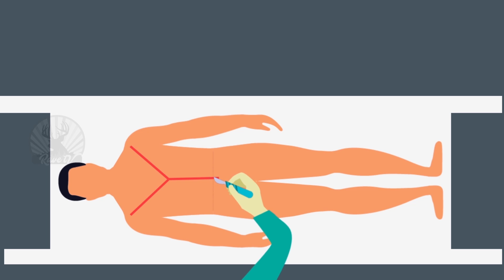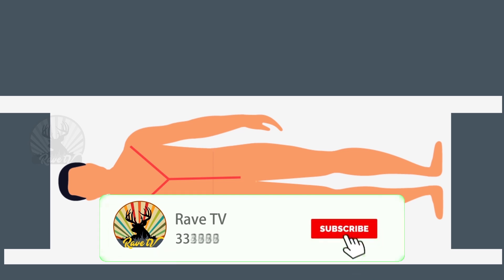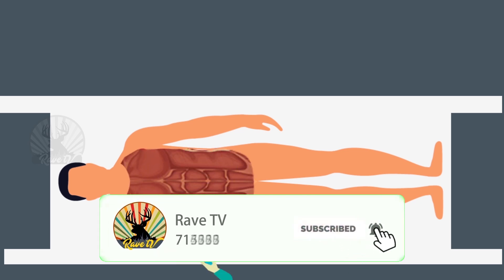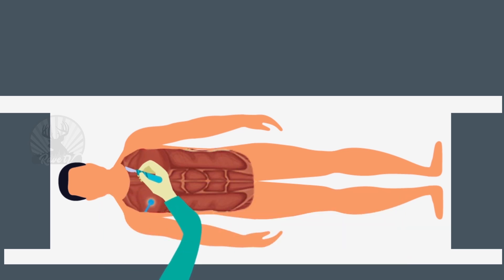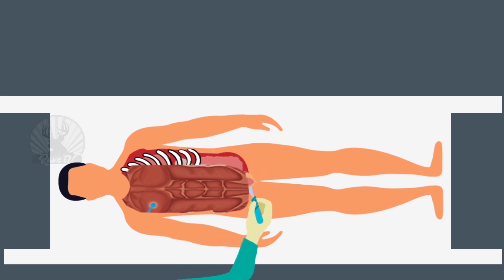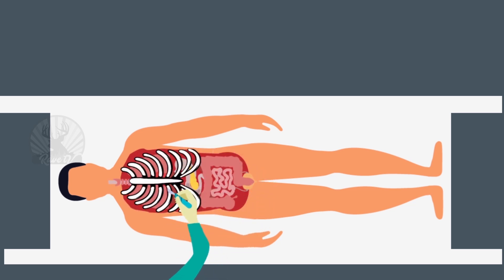The Y-incision extends as a single line all the way down to the pubic bone. Some pathologists use a T-incision if the subject is male. In either case there is little or no bloodshed as there is no heart pumping and the only blood pressure comes from gravity. After the Y-incision is made, the skin is peeled back and the muscle and soft tissue is detached using a scalpel, exposing the ribcage and neck muscles.